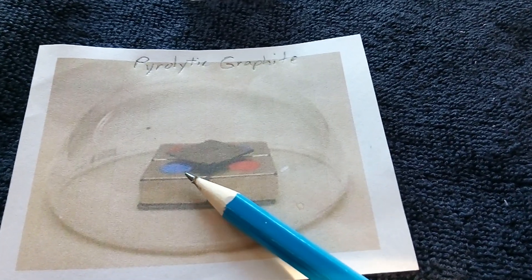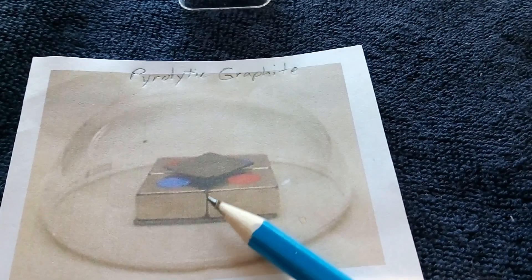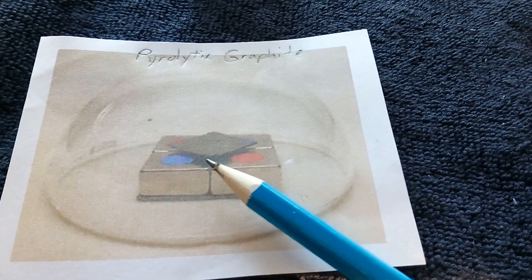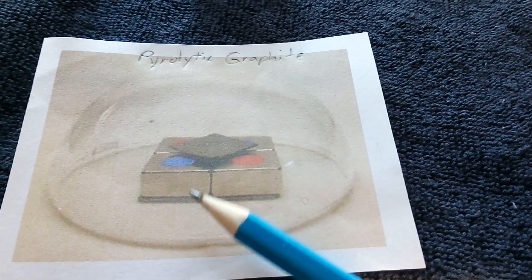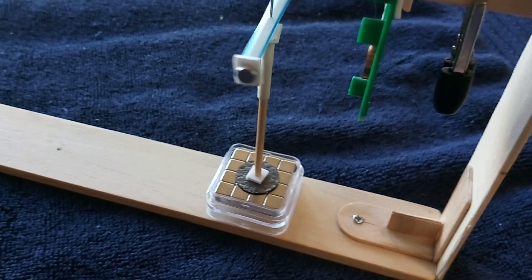And what happens is if you get magnets with alternating poles and put them together in an array, the pyrolytic graphite is diamagnetic in that it's repelled by both poles. And so it floats. It floats in the middle of that thing, and that's what's going on there.